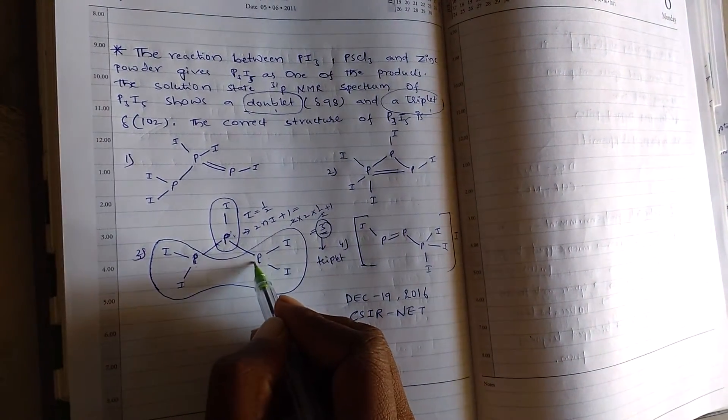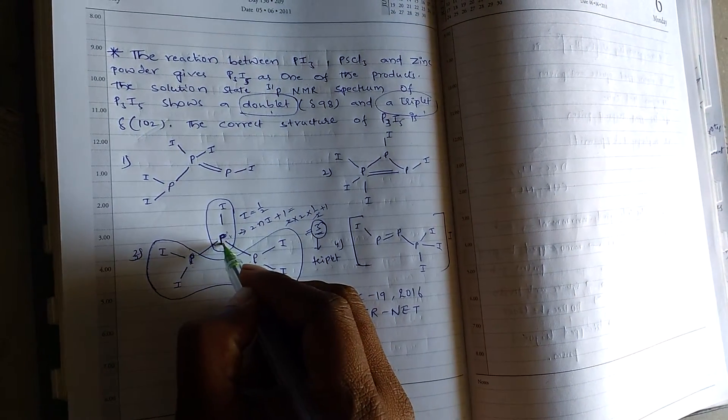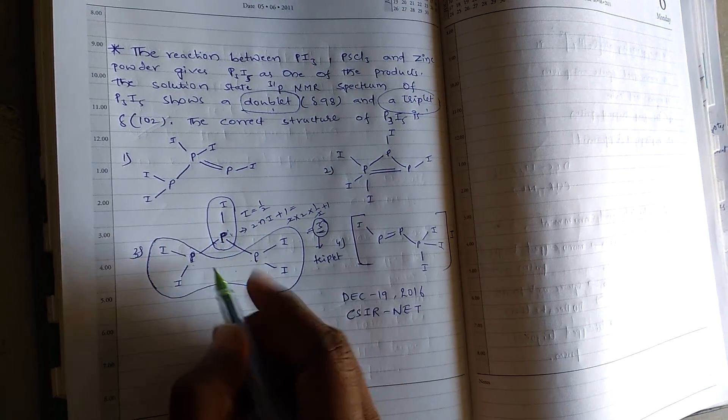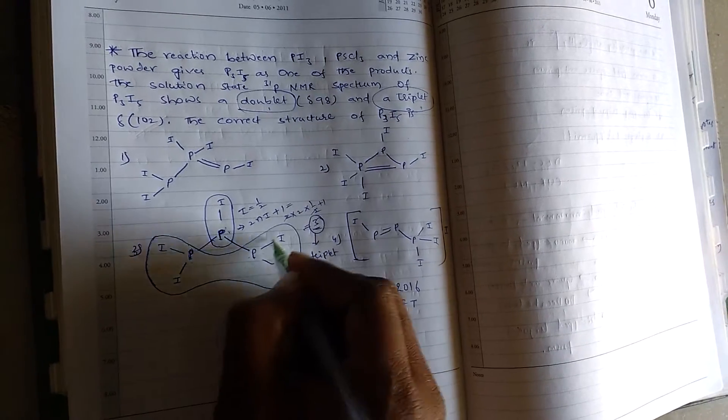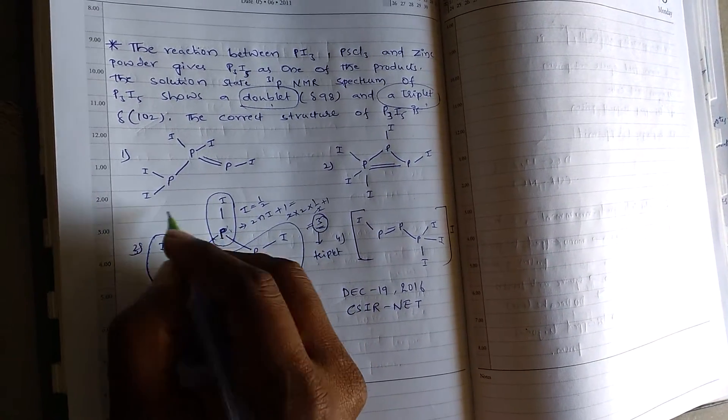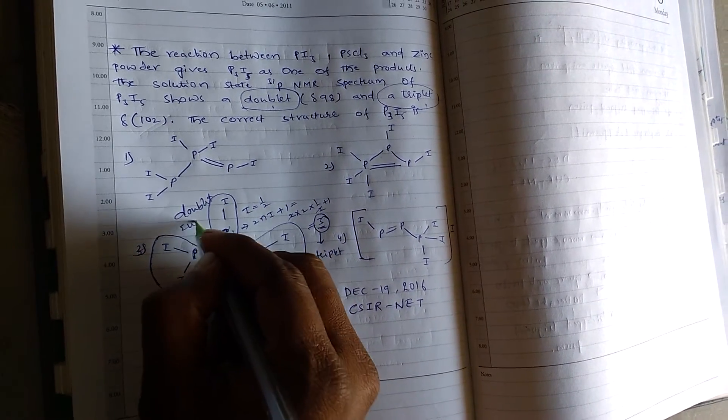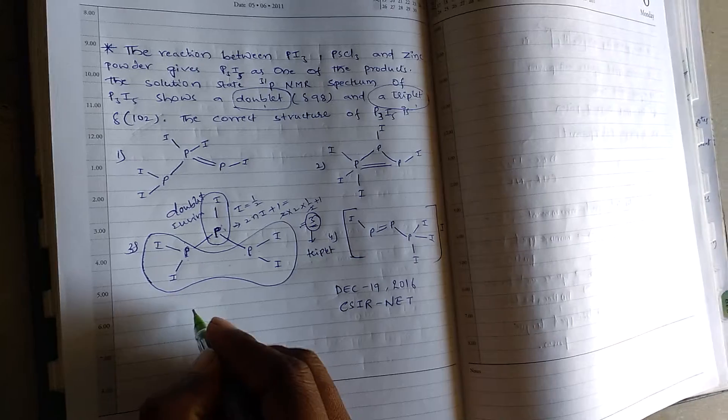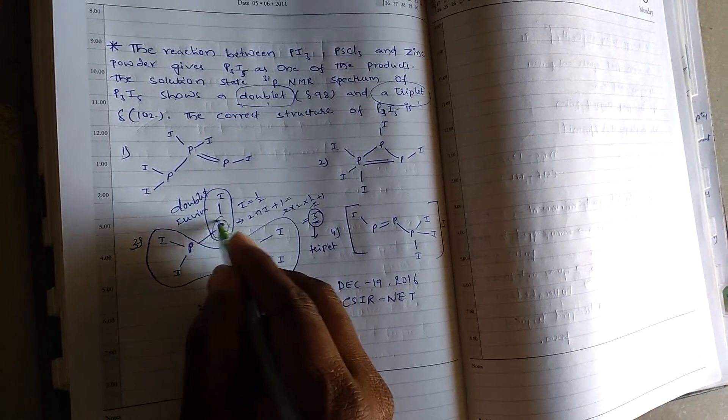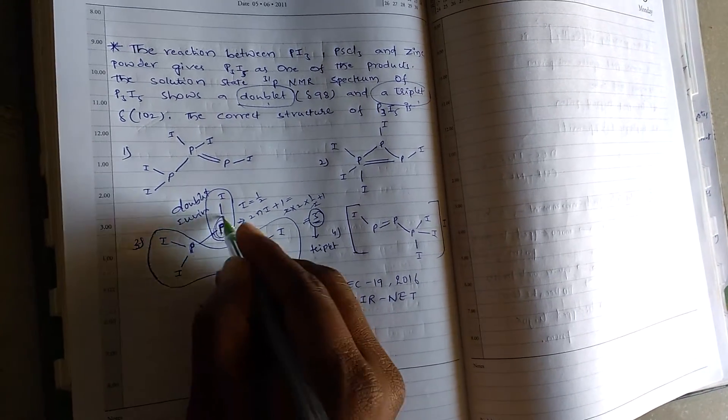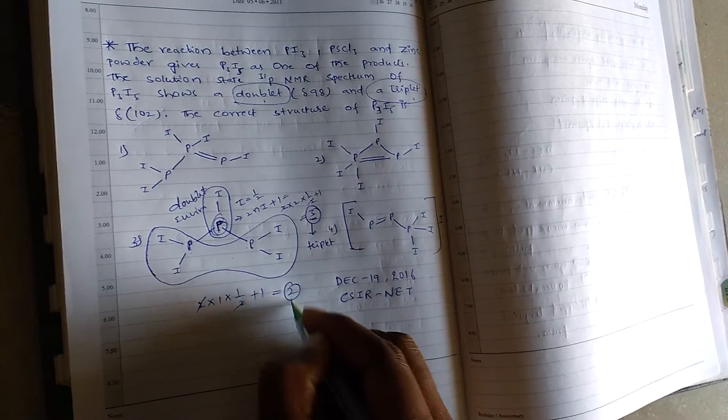And these two phosphorus with one single phosphorus atom are in a similar environment. That's why these two phosphorus are in doublet environment. Because 2 into N, that means single phosphorus, 1 into, and it has half plus 1, that's why 2. So doublet.